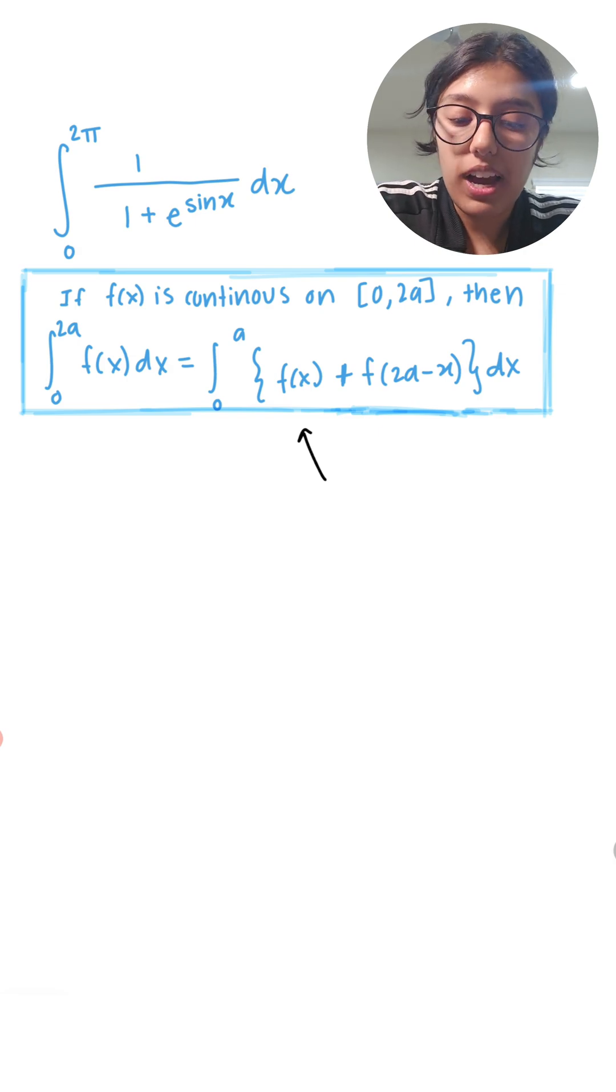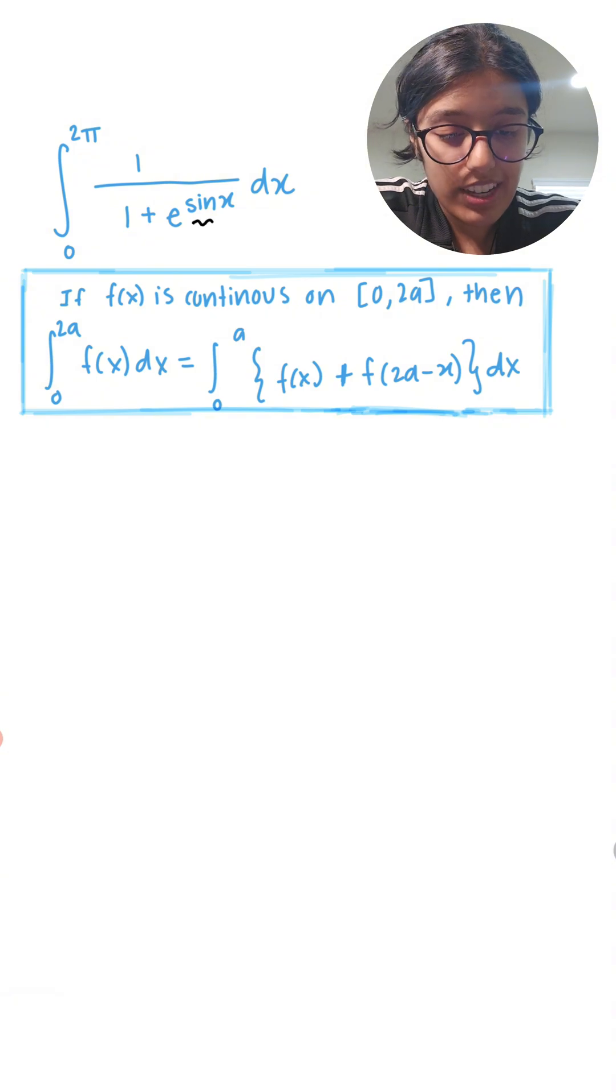Integration 0 to 2π of 1 over 1 plus e to the power of sine x dx. I noticed that in this integral we have a trigonometric function which is sine x and our bounds are 0 to 2π which makes perfect sense since sine of 2π is perfectly valid, right?